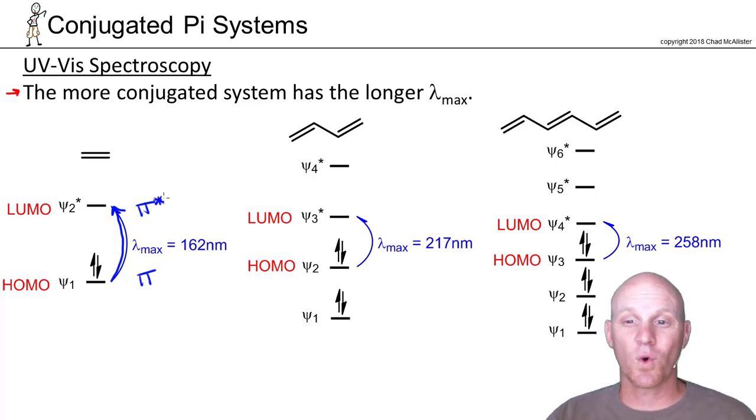For most conjugated systems, that's where it's going to be. Now obviously ethylene is not a conjugated system, but when you get a conjugated system, the more conjugated it is, the more molecular orbitals you have. The one thing we haven't talked about is the more conjugated the system, the spacing between the orbitals gets smaller and smaller.